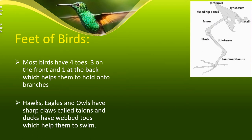Birds walk on their toes. Most birds have four toes. The common arrangement has three toes facing forward and one toe facing backward, which helps them to hold on to branches. Examples include the toes of the crow, sparrow, and bulbul.